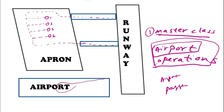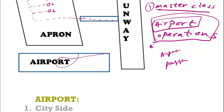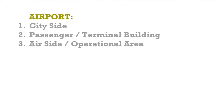Technically, the airport is categorized into three areas. The first is the city side, the second is the passenger building — also known as the terminal building — and the third is known as the air side or operational area.